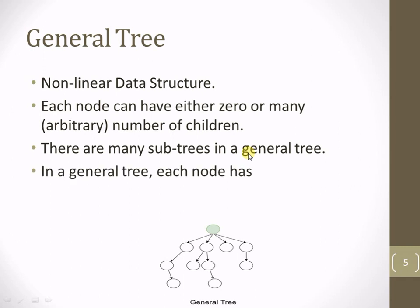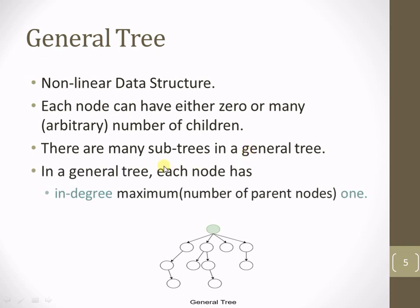The basic concept about the general tree is the in-degree, which is nothing but how many incoming edges to every node — it is always 1, except for the root node, because the root node does not have any in-degree. For all other nodes the in-degree is 1, meaning every node has a single parent node. This concept applies to any type of tree.